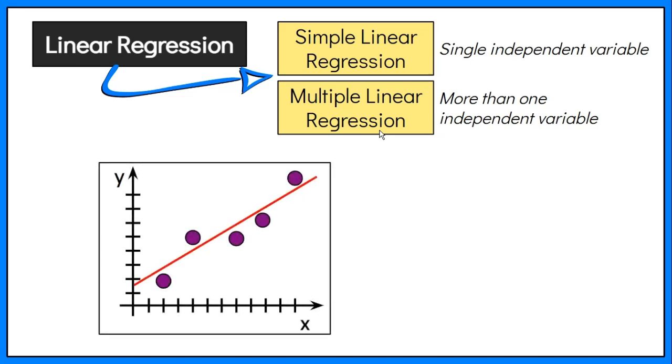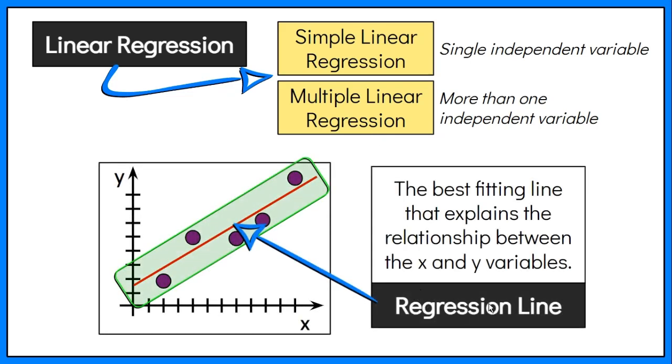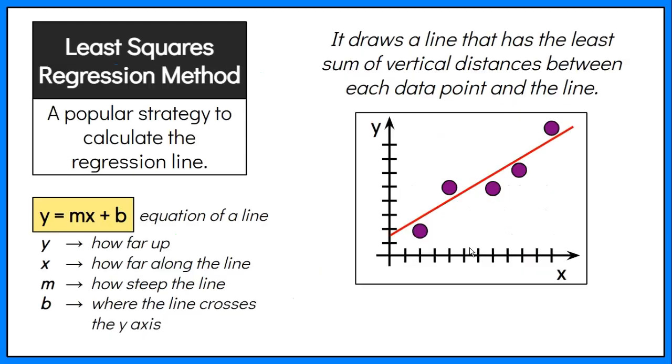The relationship between the x and y variables are explained using the best fitting line called the regression line. A popular strategy to calculate the regression line is the least squares regression method. It draws a line that has the least sum of vertical distances between each data point and the line.